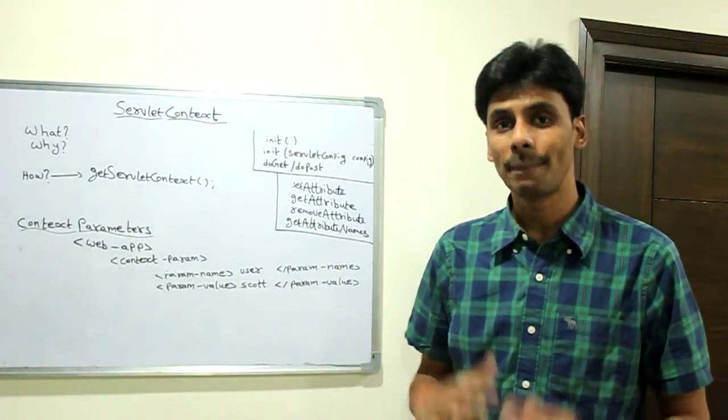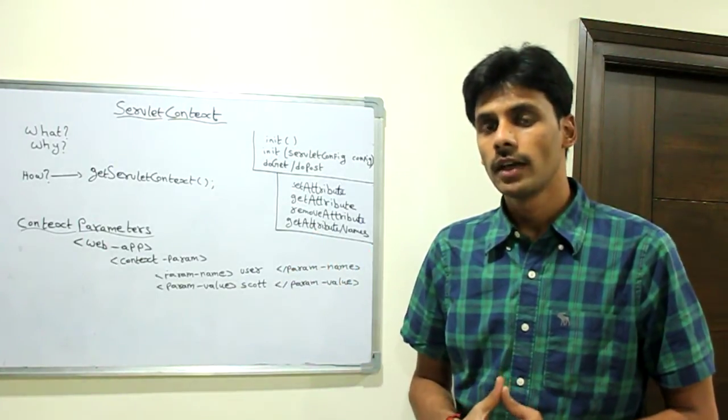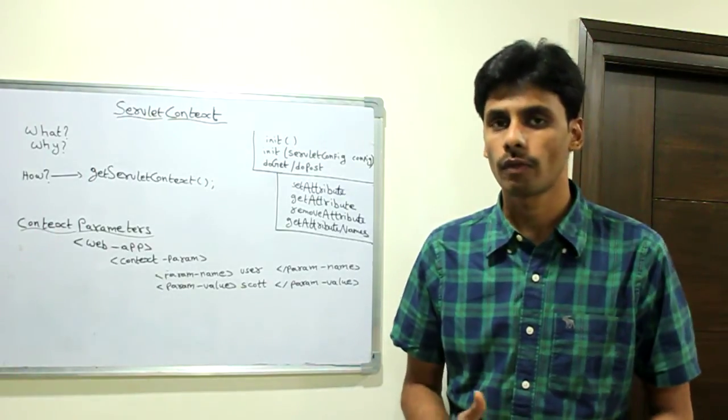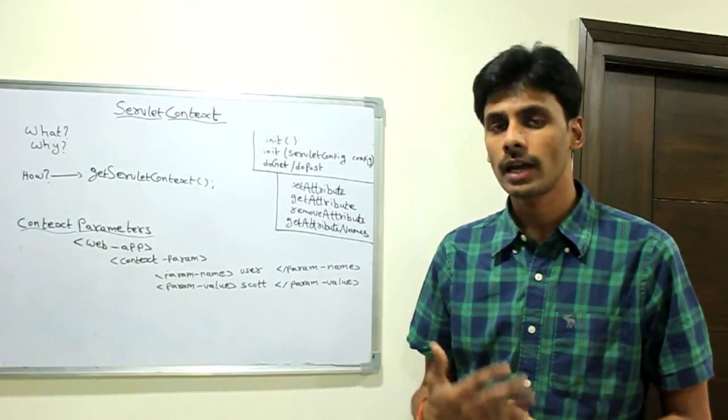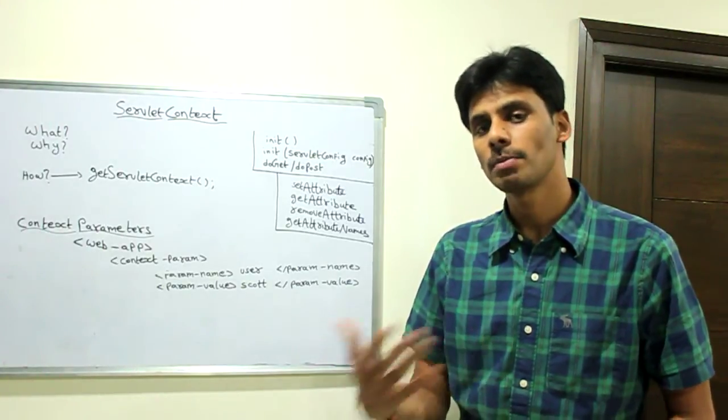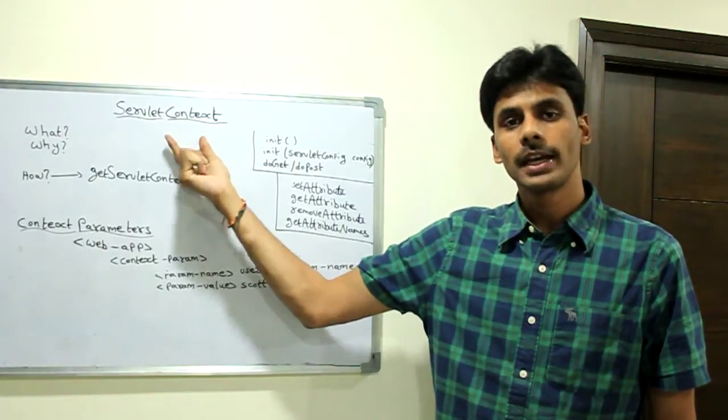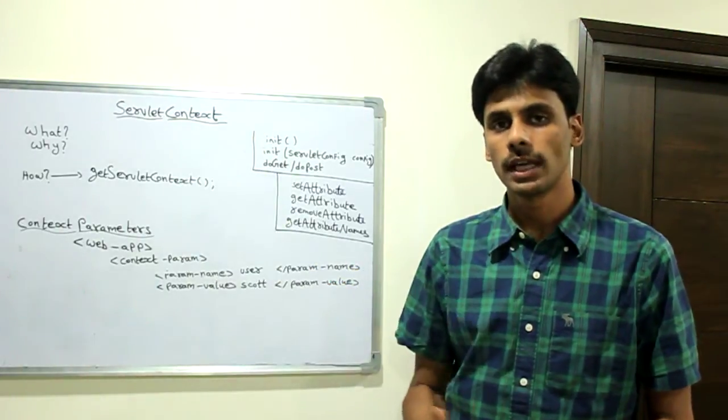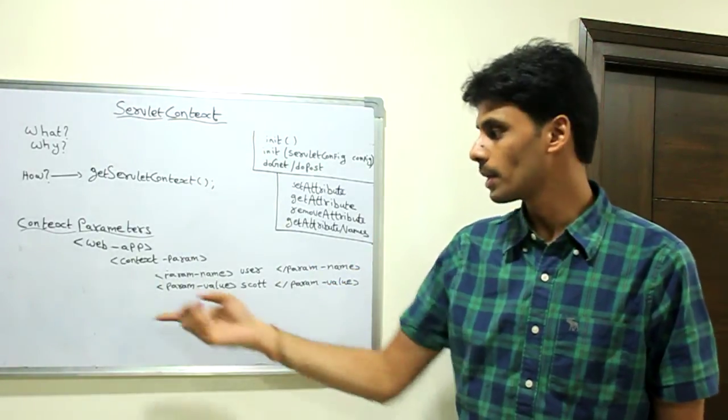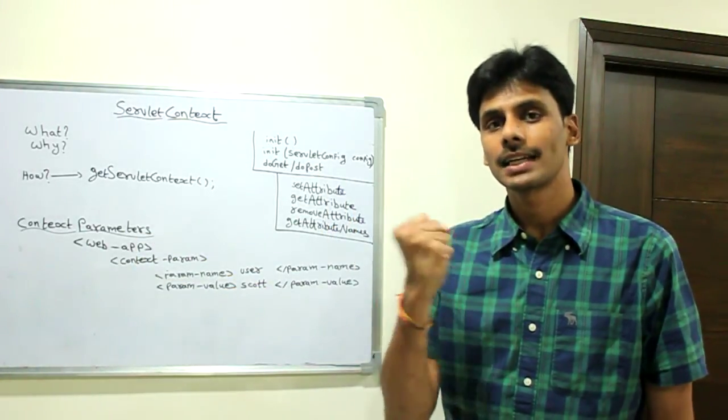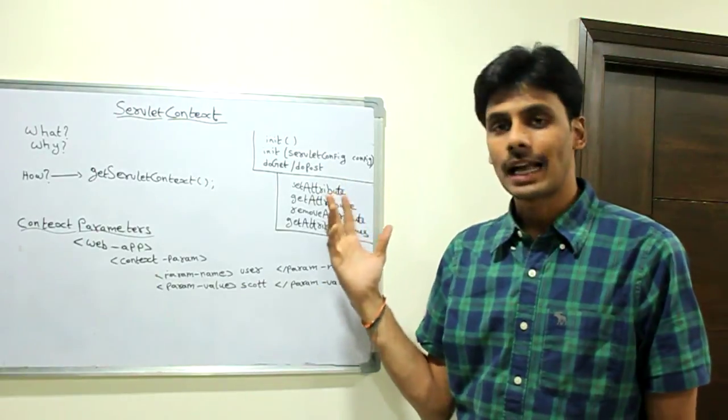Now you know that servlet context is an application level interface, the implementation of which is provided by web containers like Tomcat or WebLogic. At runtime, when your application servers start and even before your servlets are called, the application servers create an instance of the class which they implement, set all the information like the context parameters and any other servlet related information, and pass that context to the servlet classes.